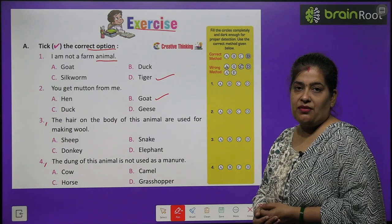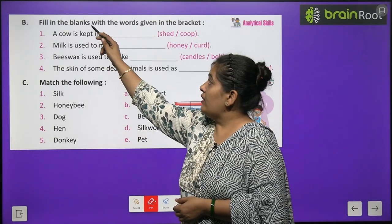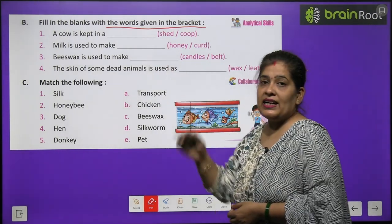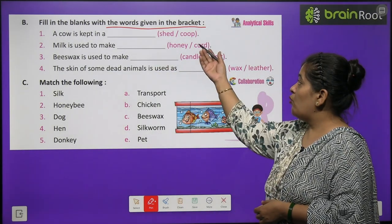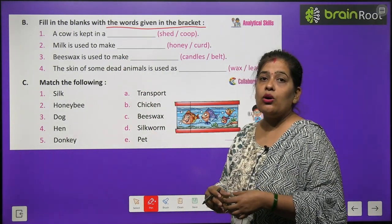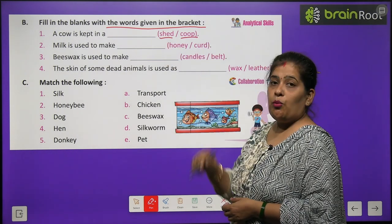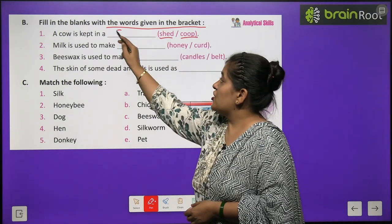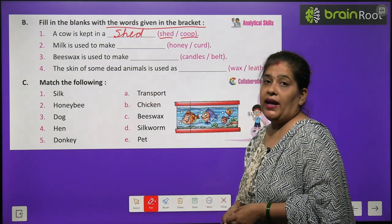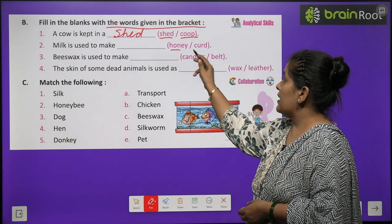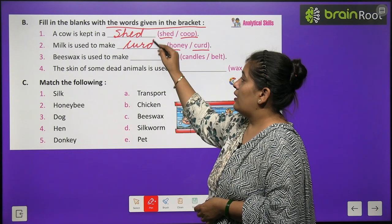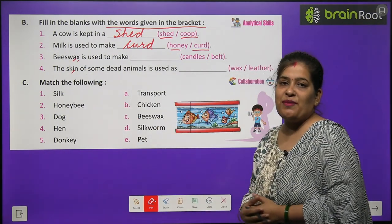Now exercise B. Fill in the blanks with the word given in the bracket. Aapko blanks ko fill karna hai with the help of words jo bracket mein diye hue hai. A cow is kept in a — cow ko kahan rakhha jata hai? Shed mein ya coop mein. Toh sahi word hai shed, S-H-E-D. Number three: Milk is used to make — doodh se kya banta hai? Honey ya curd. Doodh se banta hai curd, jise hum dahi kehte hai. Number three and four you will do by yourself.